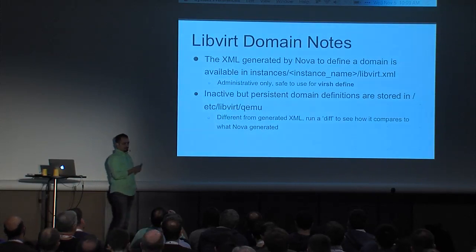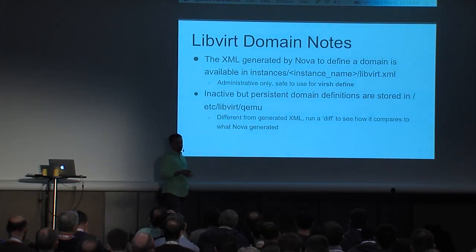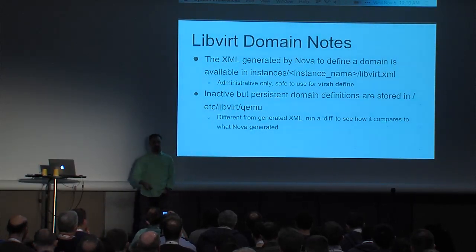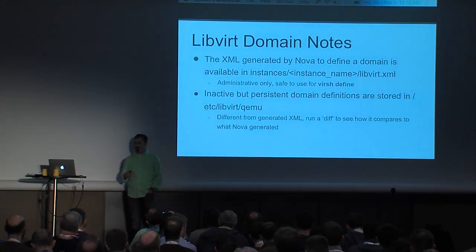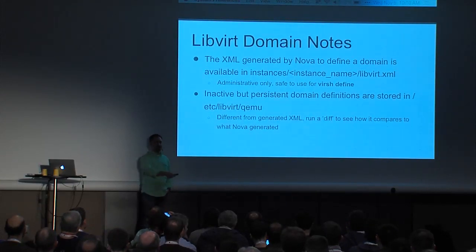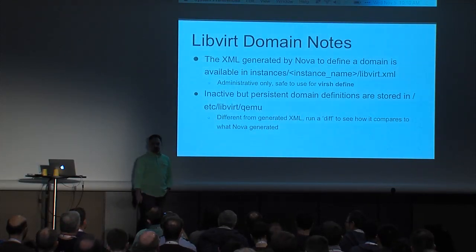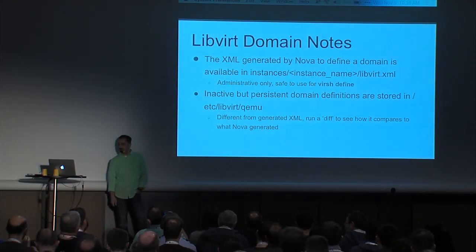All the XML for each instance running across your entire cloud is available in the instances directory — there's a libvirt.xml file in the instances directory for each instance. You can delete it if you want; it has no relevance on the runtime. Nova does everything it needs to in memory and passes it into LibVirt during the definition. But if you needed to administratively define that instance on a different hypervisor, that's how you'd go about doing that.